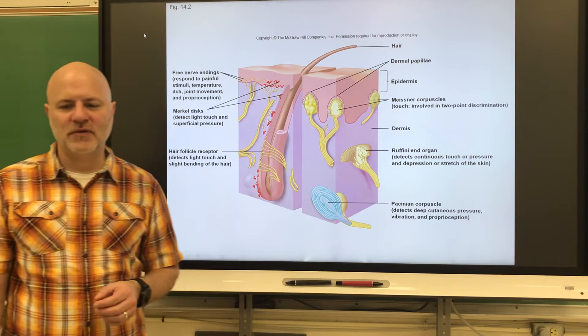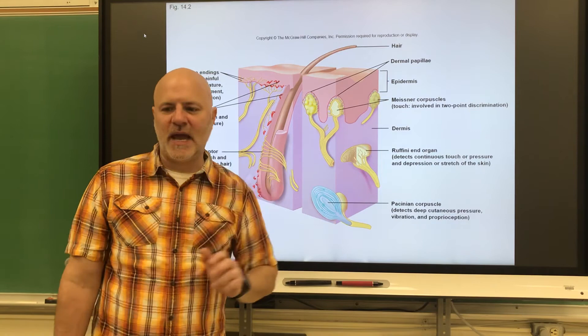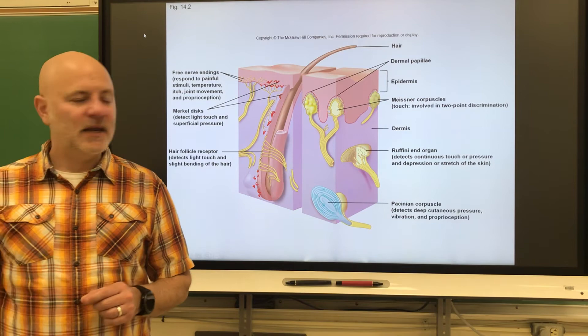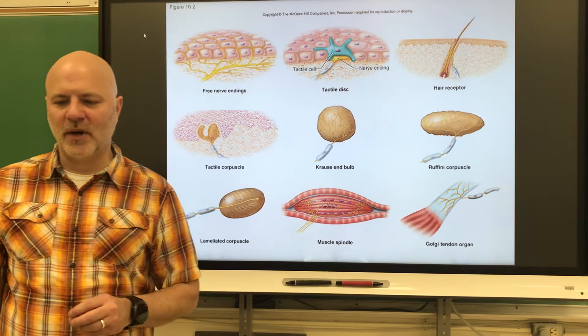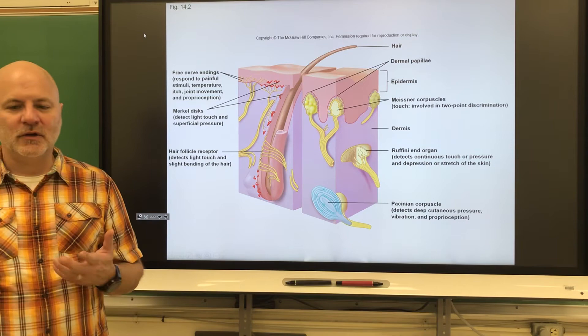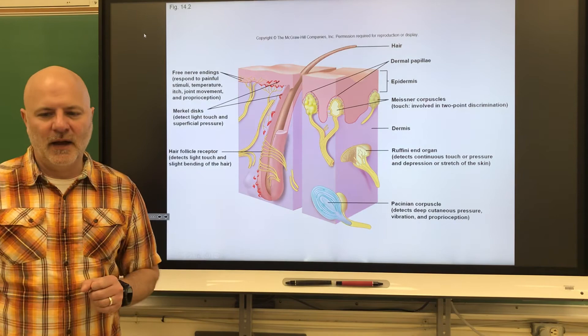Next are encapsulated dendritic endings — endings of sensory neurons encapsulated in connective tissue. The first are Meissner's corpuscles, also called tactile corpuscles, which are touch receptors we discussed when looking at the integumentary system. Next are Krause's end bulbs, which are tactile receptors in mucous membranes. Then there are Pacinian corpuscles, also known as lamellated corpuscles, which are pressure receptors. Lastly, Ruffini's corpuscles respond to deep and continuous pressure.